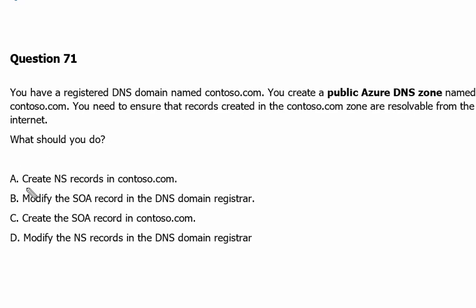Option A is: create name server records in Contoso.com. Creating the name server records will not help to point Contoso.com to Azure, because there would already be name server records in the registrar DNS. So this will not be the correct answer.